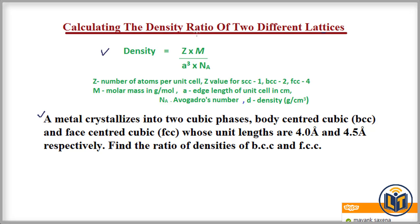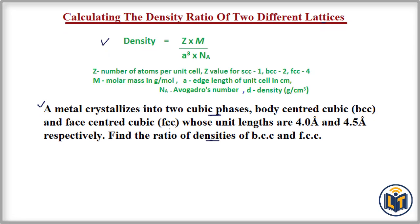In this problem I will show you how to calculate the density ratio of two different lattices. The problem says that a metal crystallizes into two cubic phases — one is BCC (body-centered cubic) and another is FCC (face-centered cubic) — whose unit cell lengths are 4.0 angstroms and 4.5 angstroms respectively. The question asks us to find the ratio of densities of BCC and FCC structures.